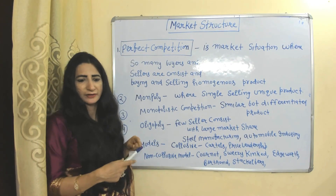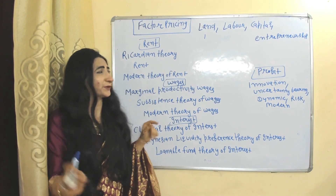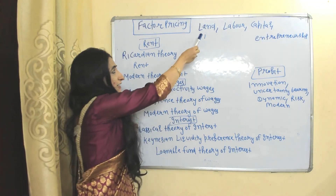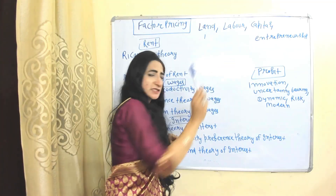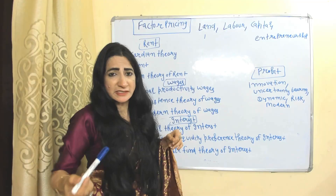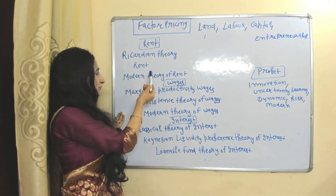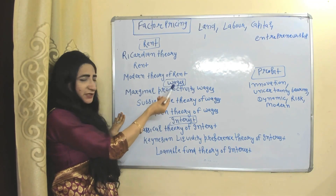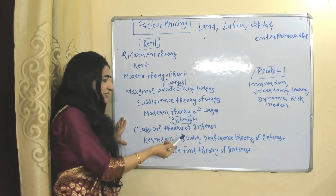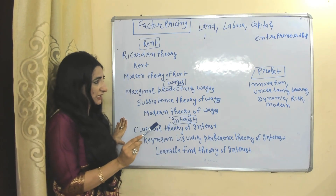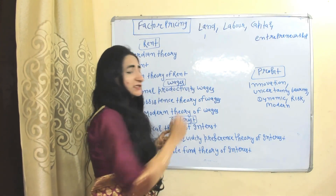Factor pricing covers the four factors of production: land receives rent, labor receives wages, capital receives interest, and entrepreneurship receives profit. Theories of rent include Ricardo's theory and the modern theory. Theories of wages include the marginal productivity theory, subsistence theory, and modern theory. Theories of interest include the classical theory, Keynes's liquidity preference theory, and the loanable funds theory. Theories of profit include the innovation theory, uncertainty-bearing theory, dynamic theory, risk-taking theory, and modern theory of profit.